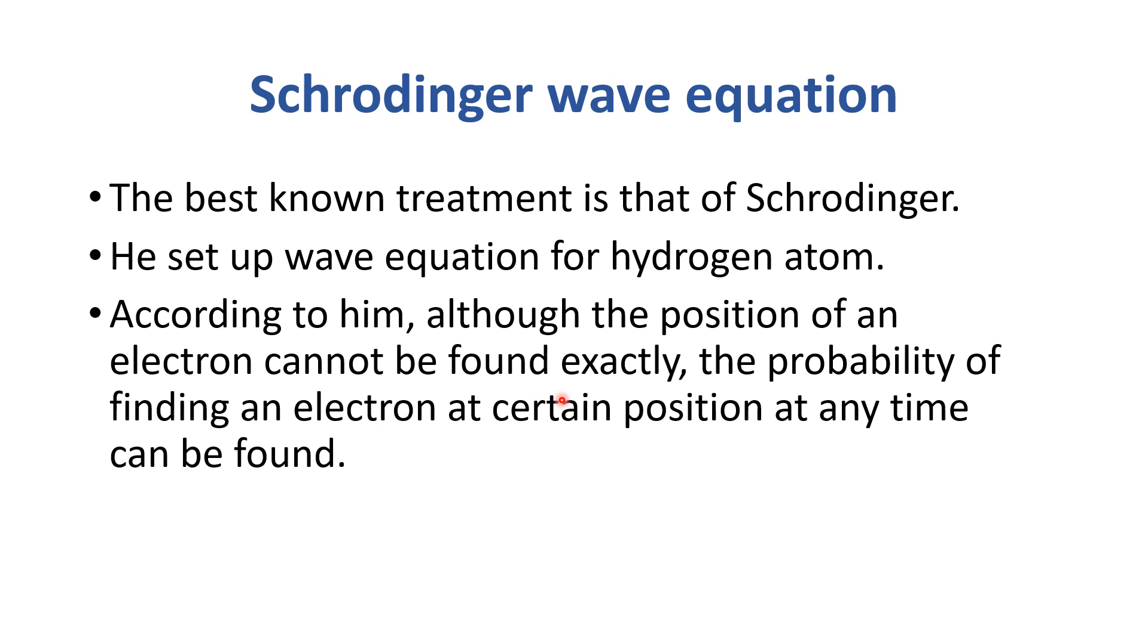He said if we can't find the position of electron exactly, but we can find the probability, the area where the electron can be found. So he proposed a mathematical relation as follows.